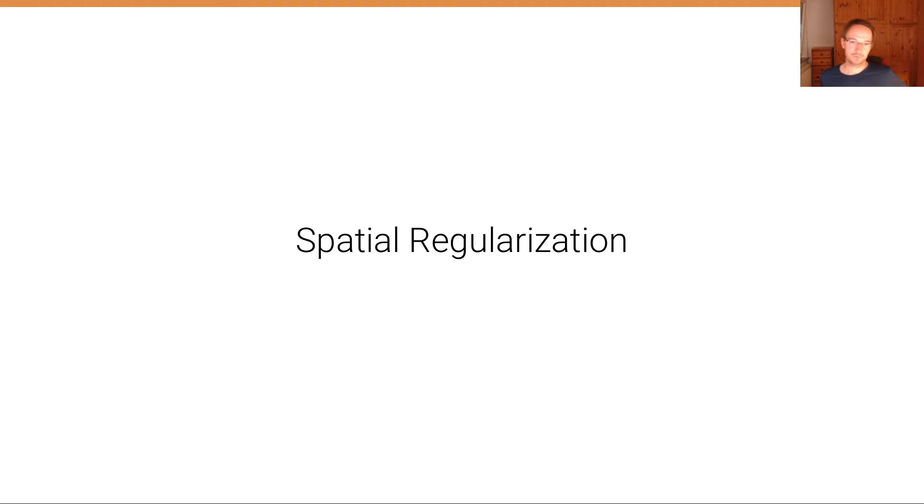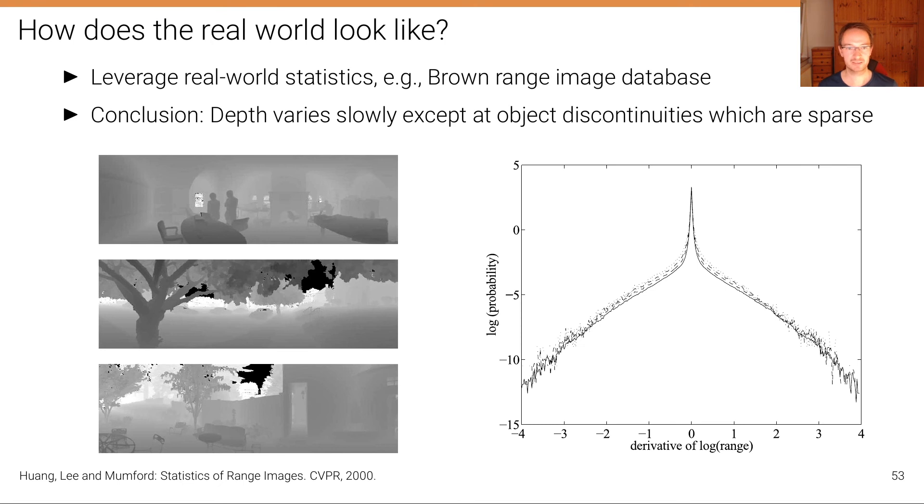Now, in order to overcome these local ambiguities that cannot be entirely overcome by a Siamese network, because it learns only local features, is to use spatial regularization. And the idea here is very simple. What we can ask is, if we look at depth images of the real world, here in this case from the Brown range image database, where real scenes have been scanned using a LIDAR scanner.